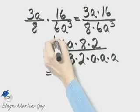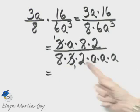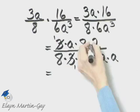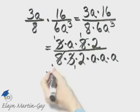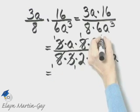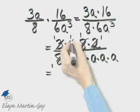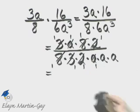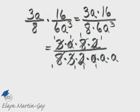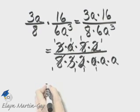Common factor of 3: 3 divided by 3 is 1, and 3 divided by 3 is 1. Common factor of 8. Common factor of 2. And a common factor of a. Now in the numerator we have 1 times 1 times 1 times 1 times 1, so in the numerator we have 1.